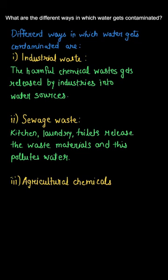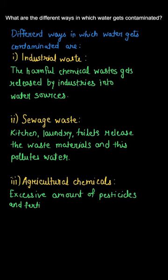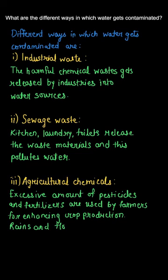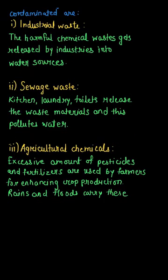The third one is agricultural chemicals. There are certain pesticides and insecticides that we use in our fields to increase crop production and improve the fertility of the soil. But there are certain products which have been banned in India, yet are still used in fields. When these products are carried by rain and floods into water bodies, and those connect to larger water bodies, that causes water pollution.